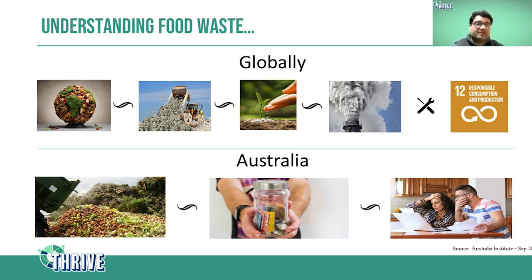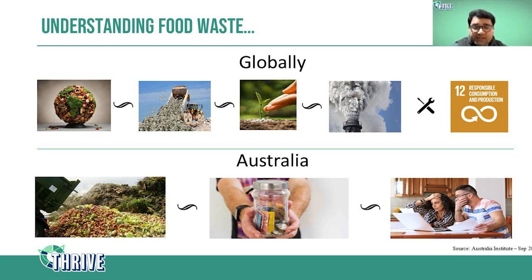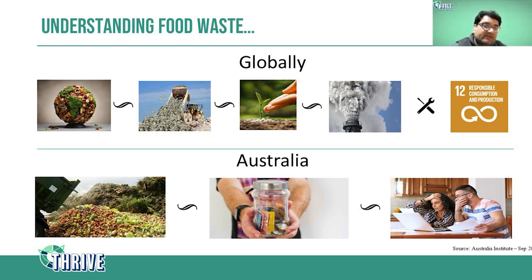To give you some perspective, 1 billion tons of food is wasted every year, which is approximately equivalent to 1 trillion dollars. To put this into perspective, Australia's GDP is around 1.6 trillion dollars, so you can understand how much food is wasted globally every year.